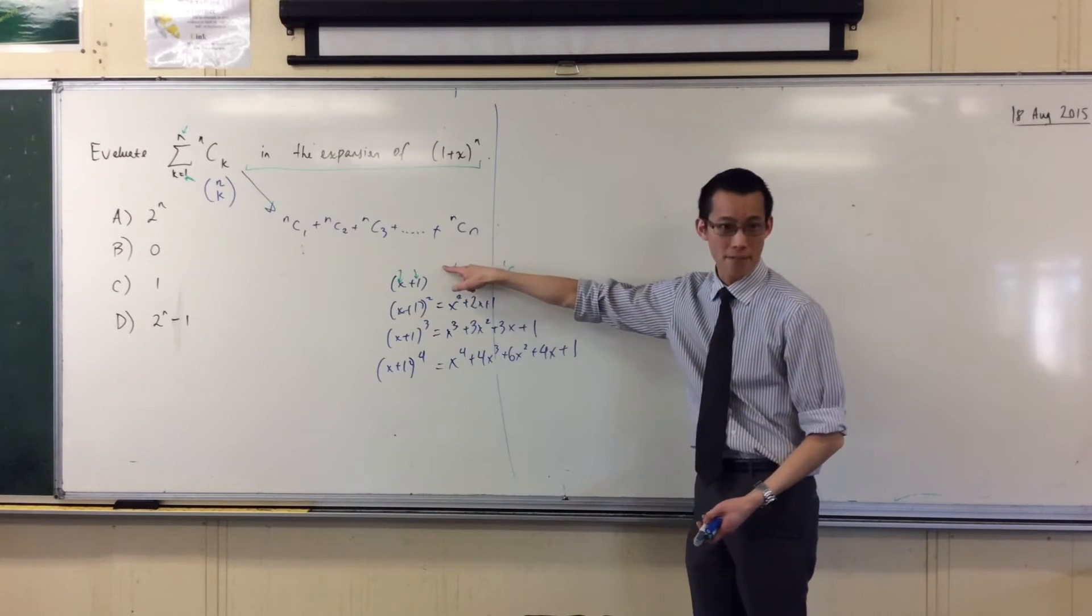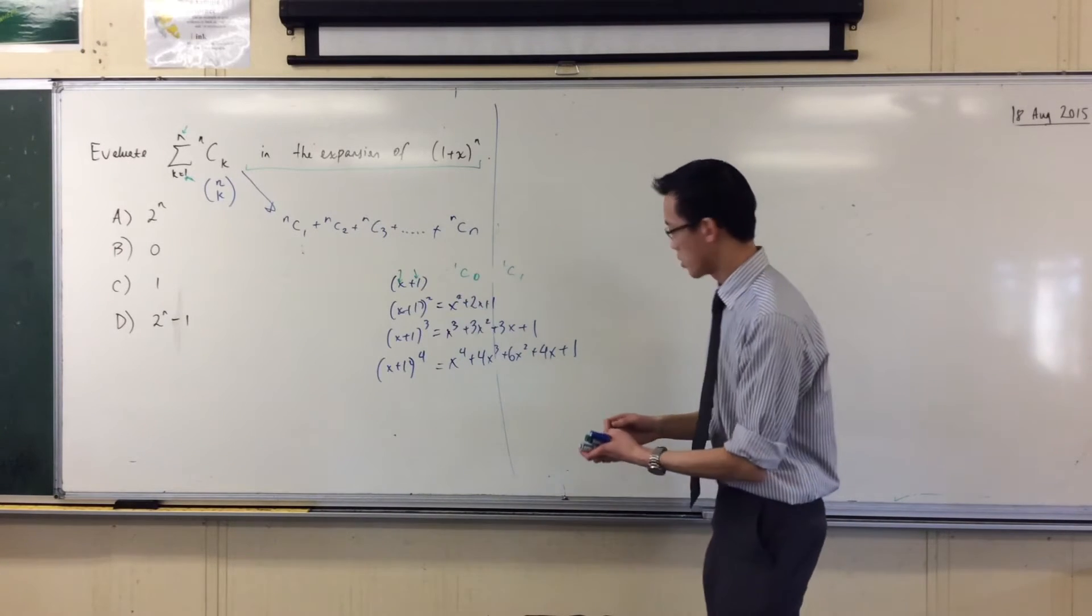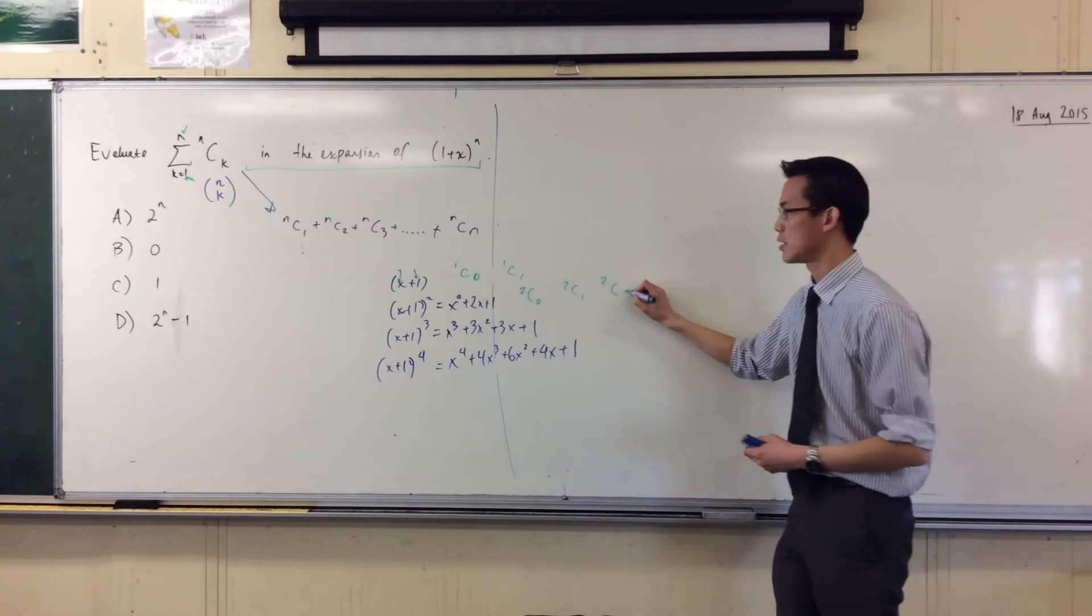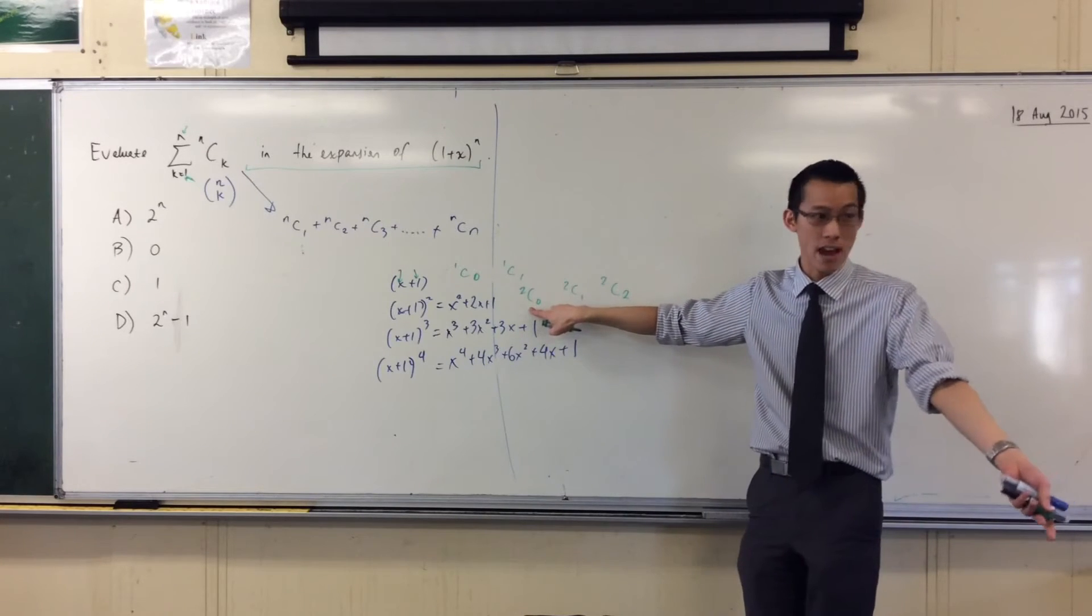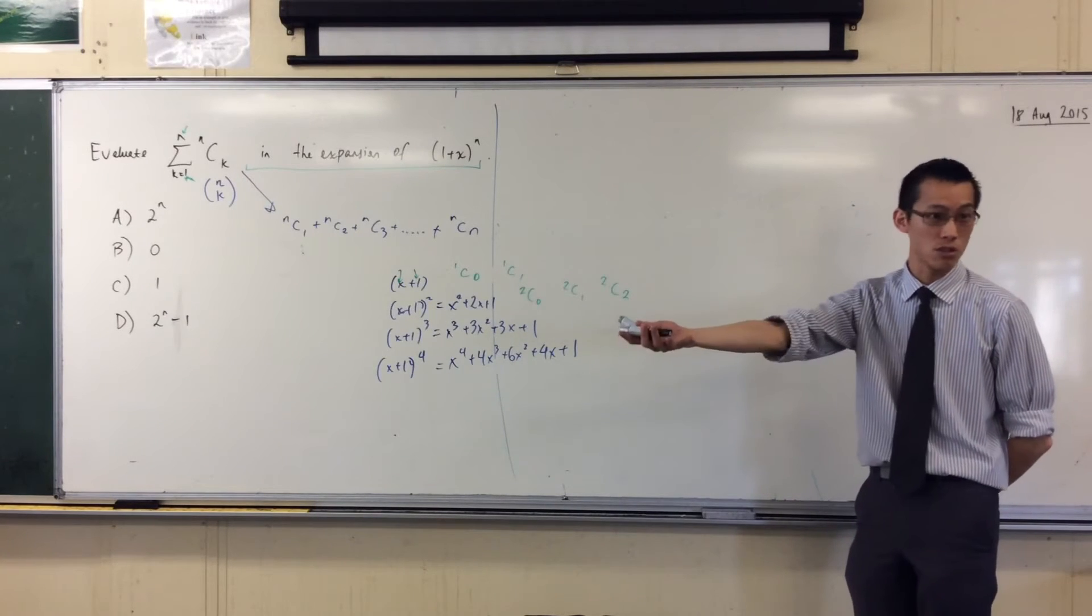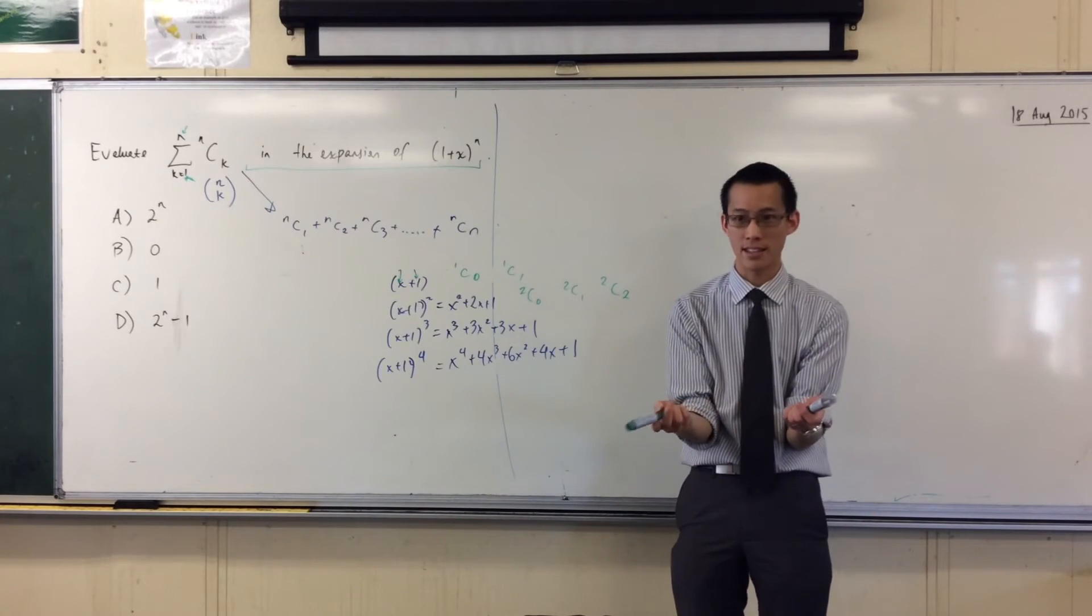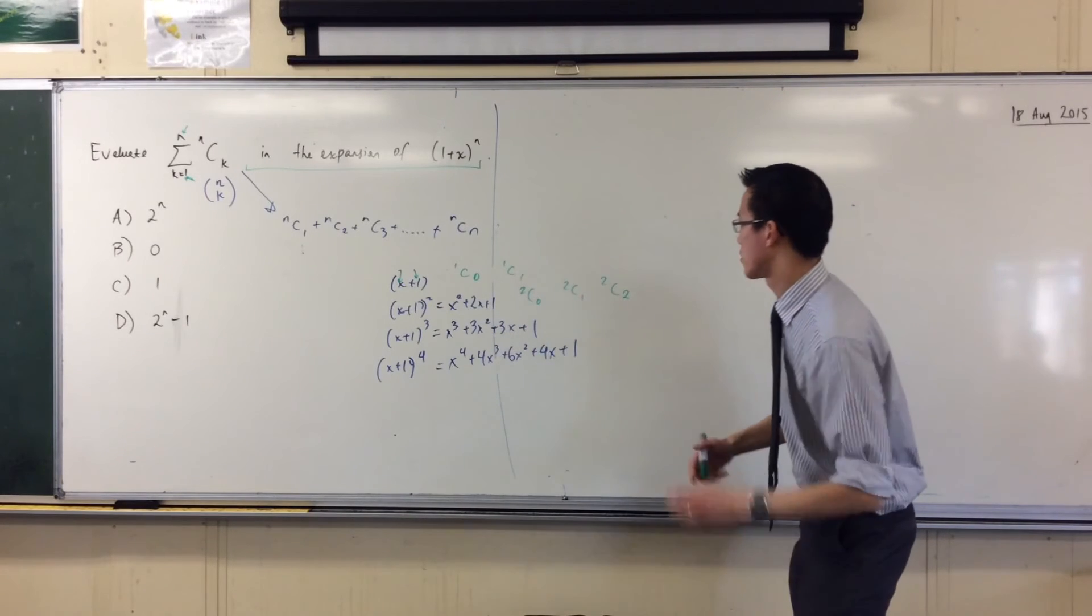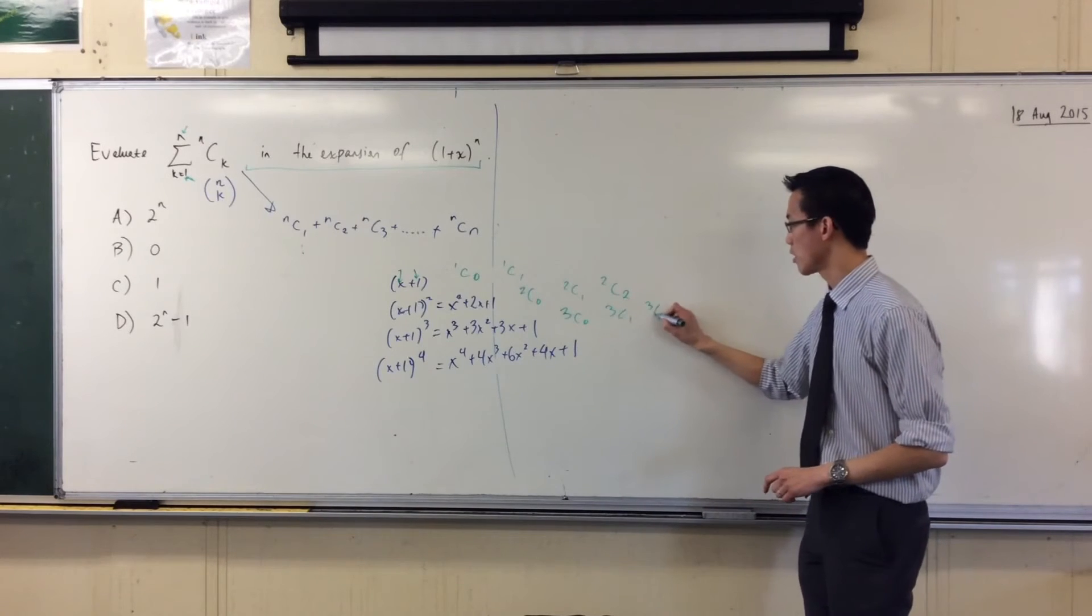They're called whatever c zero, right? So this number up the top is which row you're on. So then when we go to the next one you're going to see 2c0, 2c1, 2c2. There's only one way to choose none out of two. There's only one way to choose two out of two. If you can only choose two, and how many ways are there if you've got two to choose from to pick one of them? Answer, two ways. Hence two.